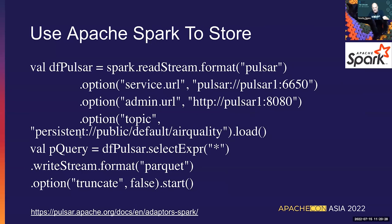One thing to note: the topic name 'Persistent Public Default Air Quality' tells me this is a stored topic in my public tenant — so multiple people can use one Pulsar cluster without security issues. 'Default' is my namespace. You give different names under different tenants to keep it clean and make your topics meaningful for the data going through them.